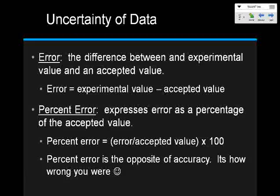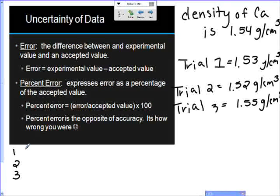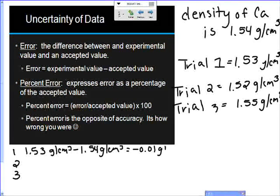The way you calculate percent error: take your error for a given trial, divide it by the accepted value, then multiply by 100. Note that percent error is the opposite of accuracy — it tells you how wrong you are. Here's an example: the accepted density of calcium is 1.54 grams per centimeters cubed. For trial one, the experimental value was 1.53 grams per centimeters cubed, minus the accepted value of 1.54, giving a negative 0.01 error.